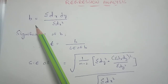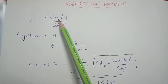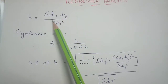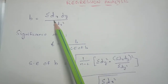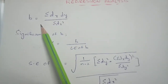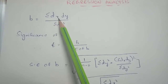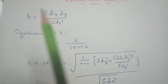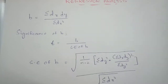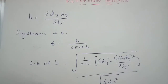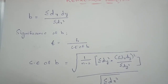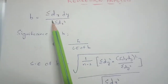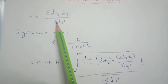The first formula is: B equals Sigma DX·DY divided by Sigma DX squared. This is the regression coefficient formula. If they ask for the regression coefficient, you apply this formula.